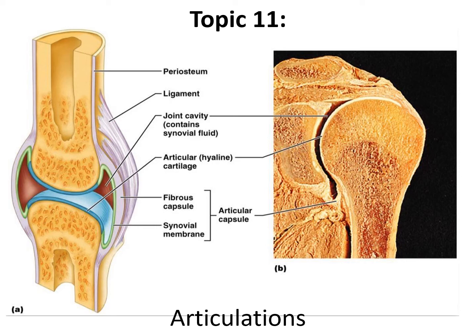Today we're going to look at articulations. Articulations are where two bones come into contact with each other. We might have almost no movement at this connection or we could have lots of movement or something in between. What you're seeing in this example is something known as a diarthrosis or synovial joint.